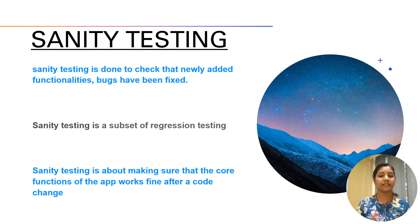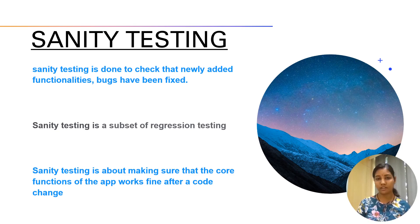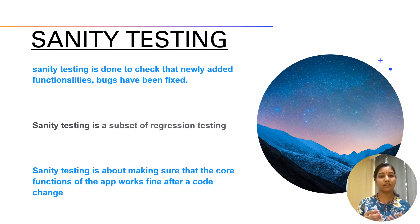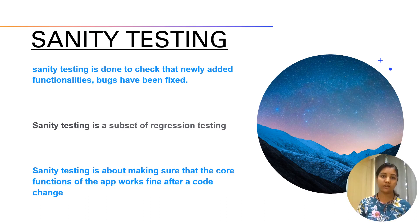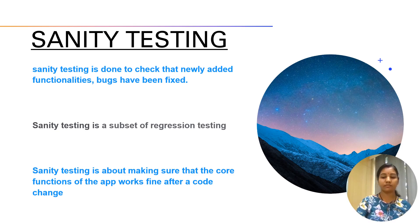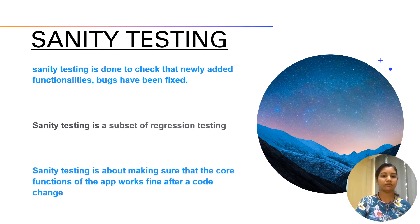Sanity testing is about making sure that the core functionality of the app is working fine after a code change. For example, if you are working on a calculator application and it is giving output 5 for 2 plus 2, then there is no need to perform any advanced level test cases like sine or cosine or finding some other module using the calculator application.